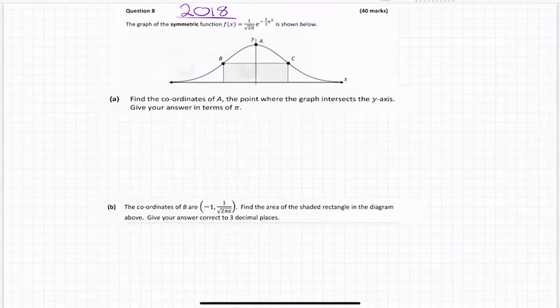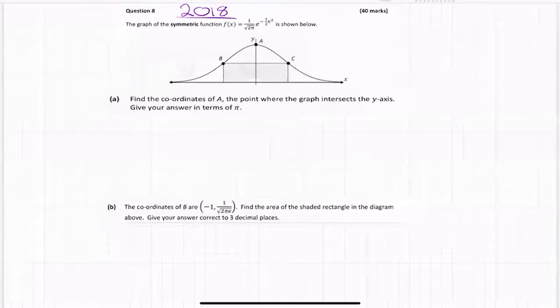Find the coordinates of A, the point where the graph intersects the y-axis. Give your answer in terms of pi. So find the coordinates of A where the point intersects the y-axis.